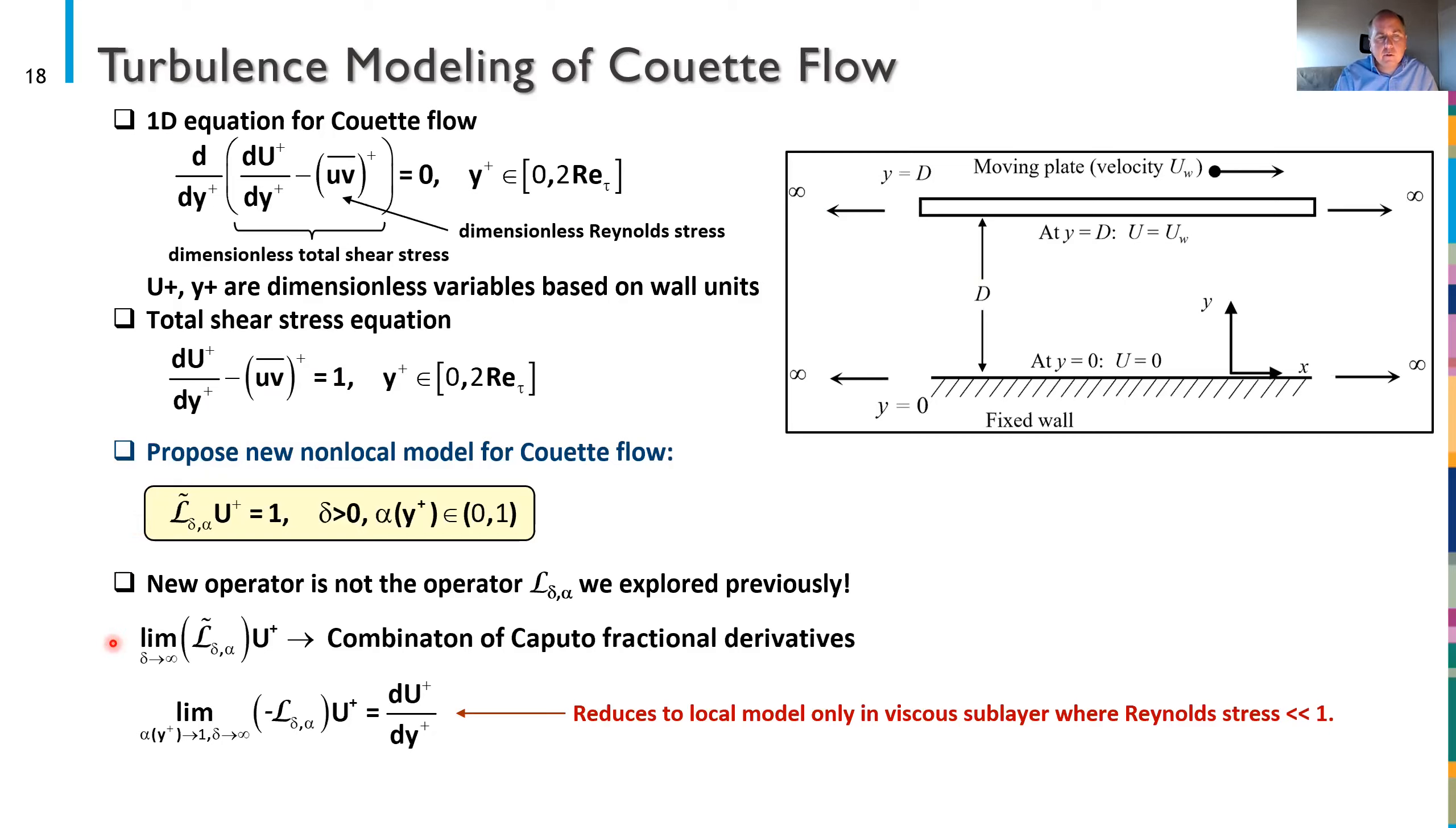If δ goes to infinity this operator ends up looking like a combination of Caputo fractional derivatives. If I then take a limit as α to one that's going to the local case we'll see it does reproduce a term in the local model. Now comparing directly you'll see that it doesn't pick up the Reynolds stress it just picks up this first derivative term here. So it's only really going to reproduce the local model in cases where the Reynolds stress is negligible and we know that's in the viscous sublayer kind of near the wall. So with that in mind...